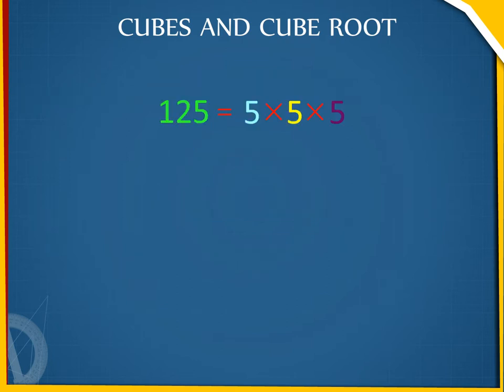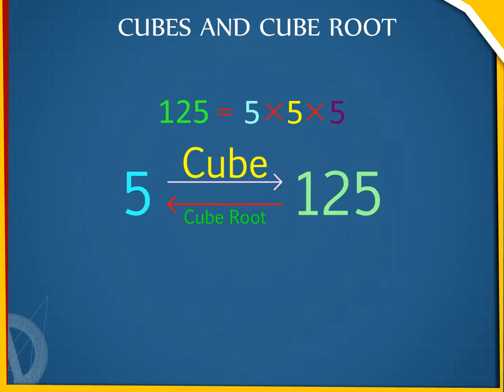Similarly, 125 is the cube of 5 and 5 is the cube root of 125. We write: 5³ = 125, and ∛125 = 5.